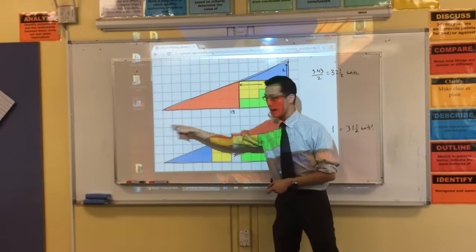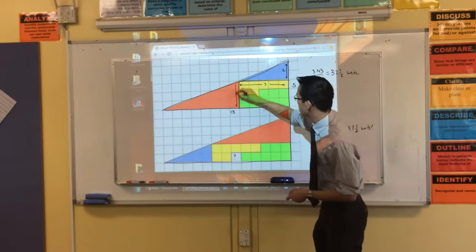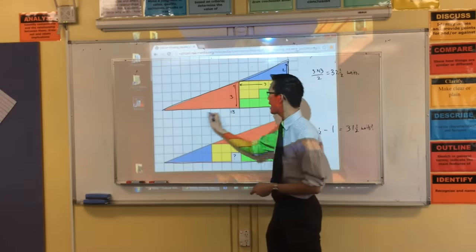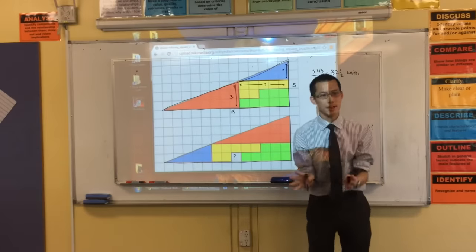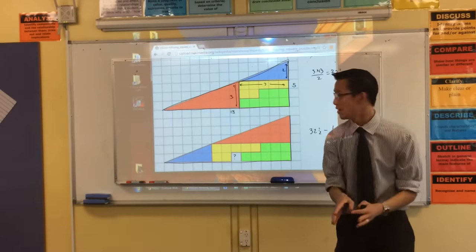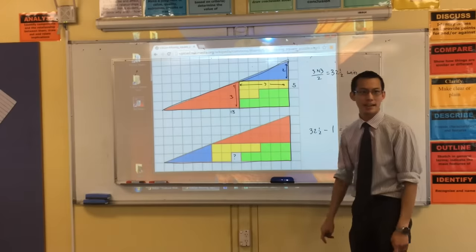But if you have a look at this triangle here, it's 3 by 8, I believe, right? 3 by 8, which is not the same. These two triangles are not similar. They look similar, but they're not actually similar, okay?